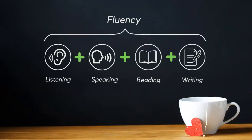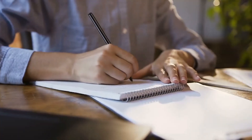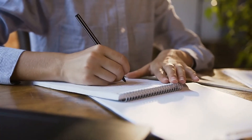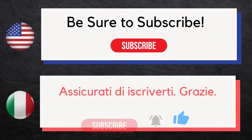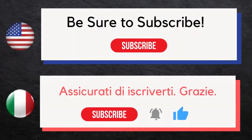It's recommended that you listen, speak, read, then write while speaking for the most effective education. First we'll speak the word in English, then we'll speak the word twice in Italian — try to repeat with us the second time. Then watch this video a second time and write each of these words in Italian while speaking them aloud. Be sure to subscribe. Assicurati di iscriverti. Grazie.